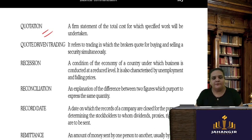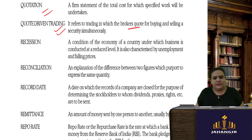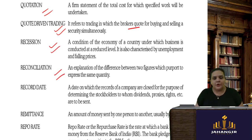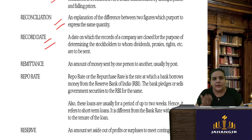A quotation is a firm statement of total cost for a specified work undertaken. Quote-driven trading refers to trading where brokers quote both buying and selling prices simultaneously. Recession is where the production and economic condition of the country is at its lowest level. Reconciliation explains the difference between two figures. Record date is the date on which the register of a company is closed to determine who the stockholders are — for dividend payment, rights issue, or bonus issue.